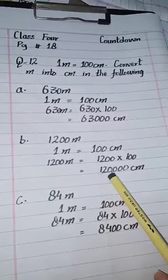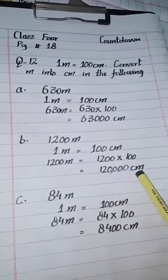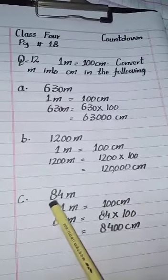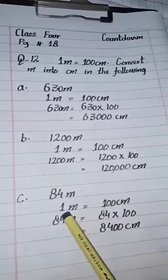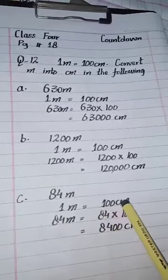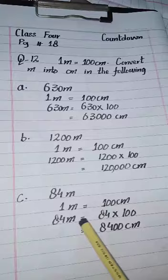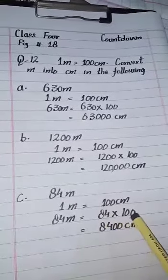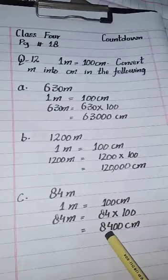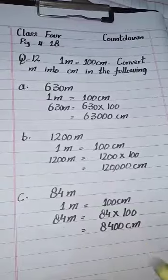Part c: Next question is 84 meters. We know that one meter equals 100 centimeters, and 84 meters equals 84 multiplied by 100, which becomes 8,400 centimeters. Thank you.